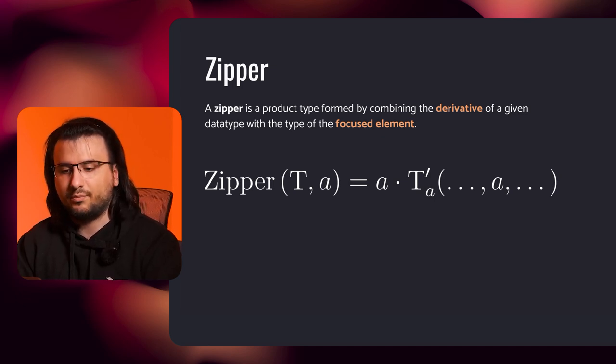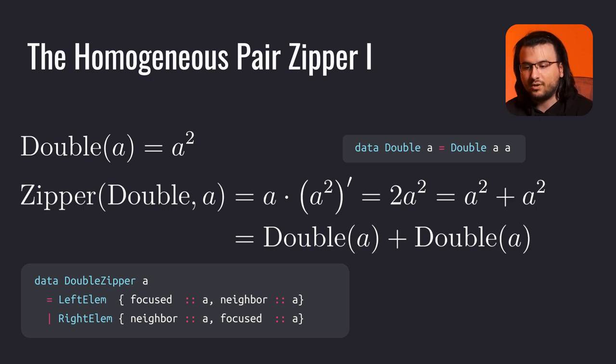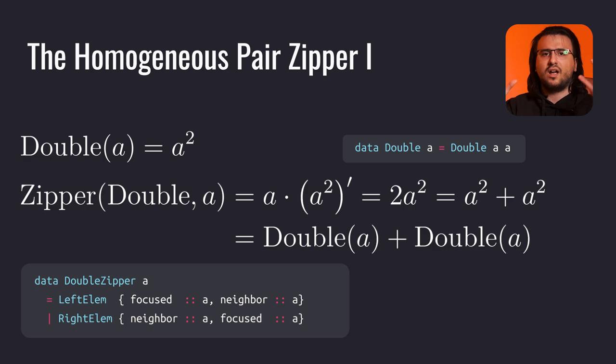We will briefly look at three examples of zippers: the homogeneous pair zipper, the list zipper, and the binary tree zipper. Earlier in the lecture, we introduced the double data type — not to be confused with the type of 64-bit floating point numbers. It represents the homogeneous pair where the two values are of the same type. Recall that its mathematical representation is a squared, which means the zipper's representation is a times the derivative of a squared, which is a times 2a, which is 2a squared, or equivalently a squared plus a squared. We express it this way to illustrate a more understandable definition of double zipper as a sum type.